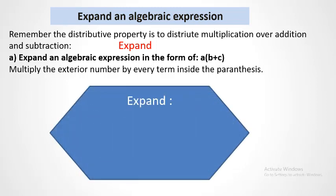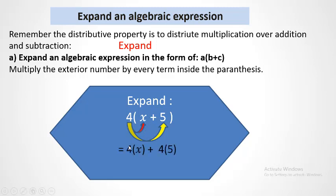For example, the exterior part here is 4. Multiply it by a factor of two terms, x plus 5. First, we multiply the exterior term by every term inside the parenthesis: 4 multiplied by x, plus 4 multiplied by 5. So 4 times x is 4x, plus 4 times 5 is 20.